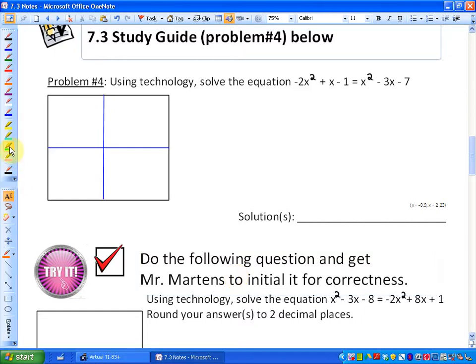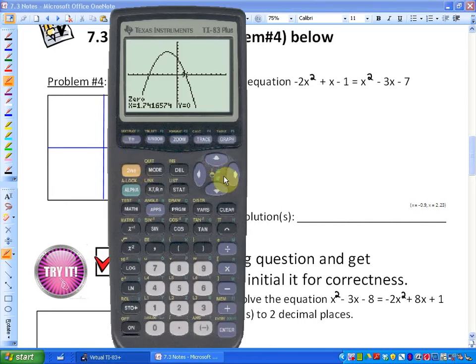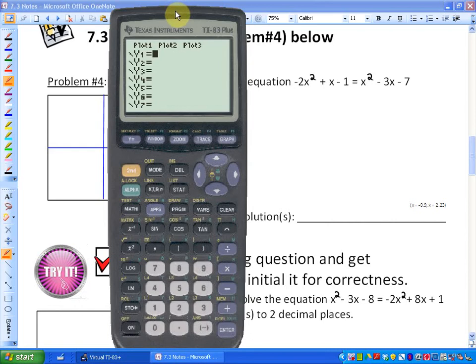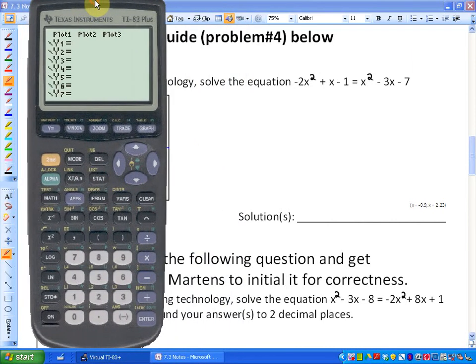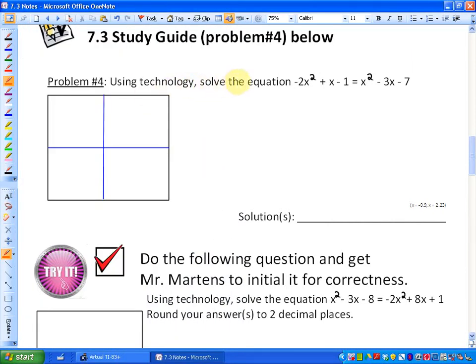If you look at this equation, we're on problem number four in your 7.3 study guide. It says using technology, so again if you don't have a graphing calculator, go ahead and get one and then come back.